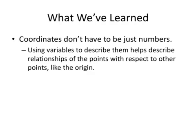What we've learned: coordinates don't just have to be numbers, we can use variables to help them to describe them, and this helps describe the relationships of the points with respect to other points like the origin. So each problem is going to be different and your variables that you use may not be the same as anybody else's but they might be somewhat similar. It's a great way to show formulas for things, it's also a good way to build proofs, and that's what we're going to use it for in the next section is to build proofs to show that different figures would have to be congruent or to show what the relationships between different parts of quadrilaterals would have to be to make them different shapes.